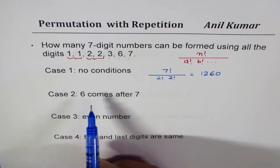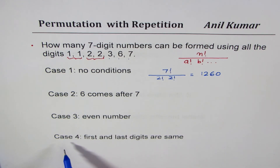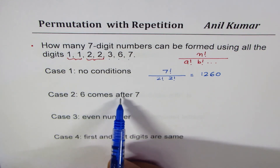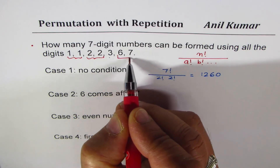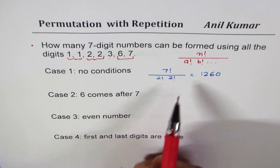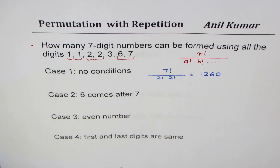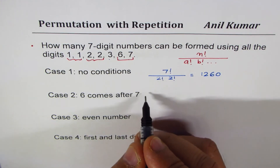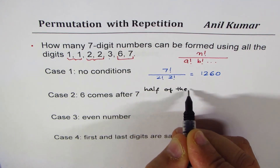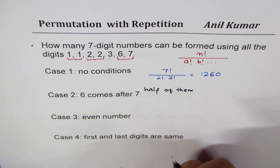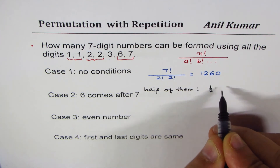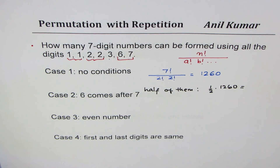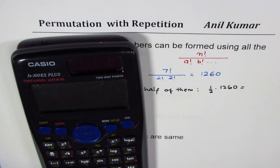Now we'll impose some restrictions. Case 2: 6 comes after 7. We're looking at these two numbers, 6 and 7, and we want 6 to come after 7. Half of the arrangements will have 6 before 7 and half will have 6 after 7, so the answer is simply half of 1260, which is 630.